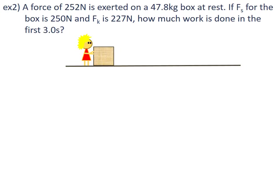Example 2: A force of 252 newtons is exerted on a 47.8 kilogram box at rest. If the static force of friction for the box is 250 newtons, we have an applied force of 252 and a static force of friction of 250 newtons — that means the box is moving. And if the box was not moving, there would be no work done, and this question would be much easier.